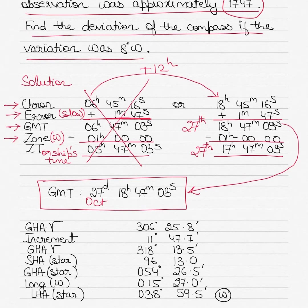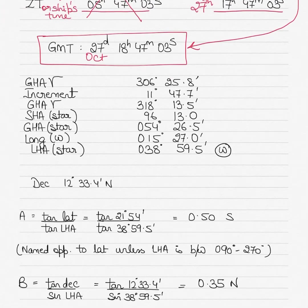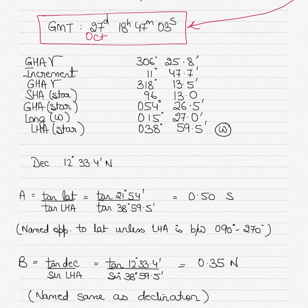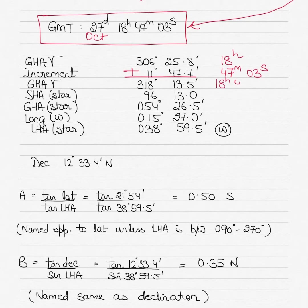Many students in a rush use the zone time to solve the question — that is incorrect. Make sure you highlight the GMT time and write it separately. Once you have the correct GMT date and time, go into the nautical almanac. Because this is a star question, find the GHA Aries for 1800 hours, then find the increment for 47 minutes 03 seconds. Increments are always added.